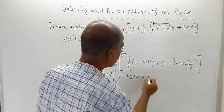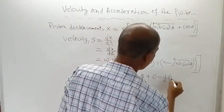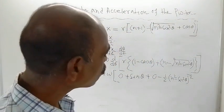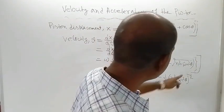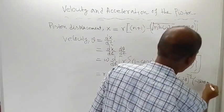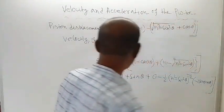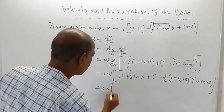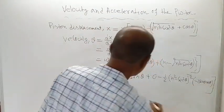Here a minus is present, so this becomes minus one-half, into (n² - sin²θ) to the power minus one-half — because the power rule gives half minus 1 = minus half. Then the derivative of -sin²θ is -2sinθ·cosθ. The two negatives become positive, and 2sinθ·cosθ = sin2θ. So we get a term with sin2θ multiplied by minus one-half.